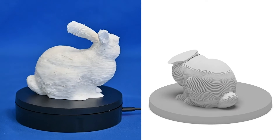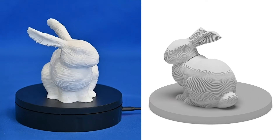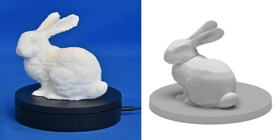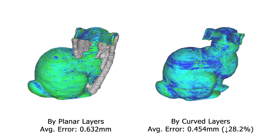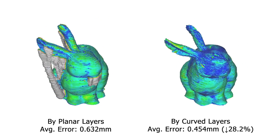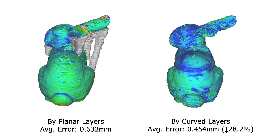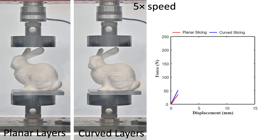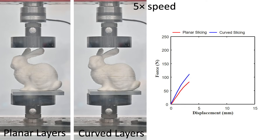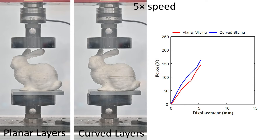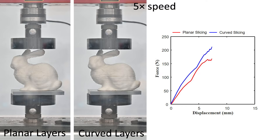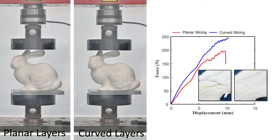Here we show the printing result and layer growing for the bunny model. Surface quality has been largely improved in the regions of the head and the back. We also evaluate the performance of reinforcement by compression testing. The model printed from curved layers shows stronger stiffness, and the breaking force increases by 25%.